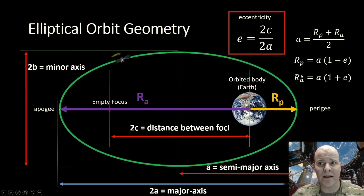We can also define r_p and r_a in terms of semi-major axis and eccentricity, and those equations are shown here. r_p is equal to a times the quantity 1 minus e, and r_a is equal to a times the quantity 1 plus e.